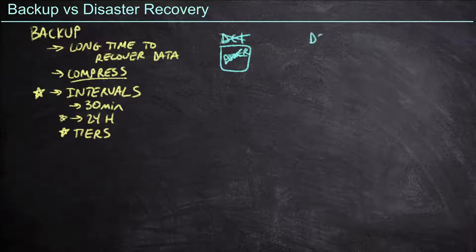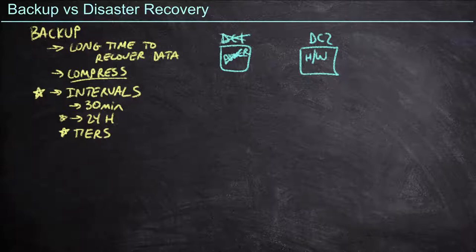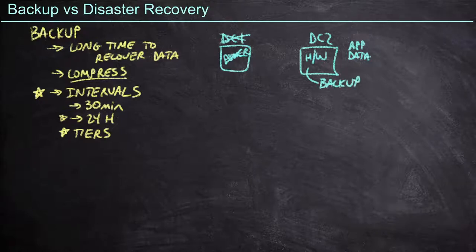At this point, we want to fail over to data center two, where we have some hardware sitting in the racks — maybe new hardware, maybe old hardware — that's ready to go. How do we get our applications and data running when we're relying on our backup systems? Ideally, we have a backup appliance here. If we don't, we're going to have to go get the backup system wherever it is and drive it to this data center.